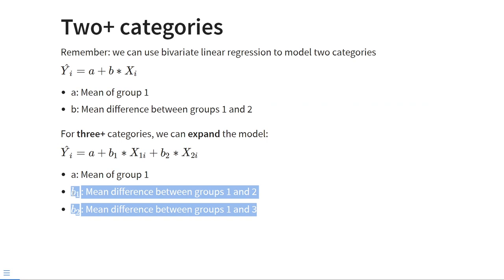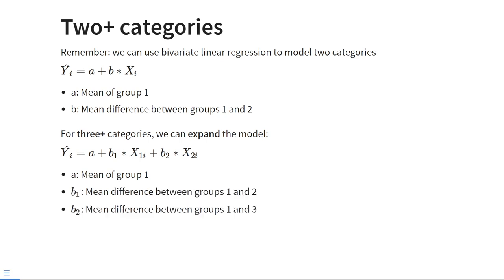When we were using dummy variables, it didn't make much of a difference that we're looking at the effect of membership of one category controlling for membership of all other categories, because group membership is exclusive. If we have one categorical variable with three categories, you are either in category one, two, or three. If you score one on one dummy variable, you score zero on all others, so it was not necessary to learn about multiple regression when representing group membership using more than one dummy variable.